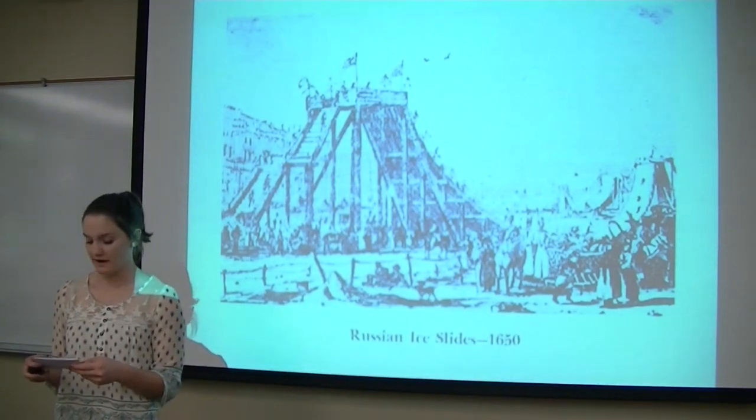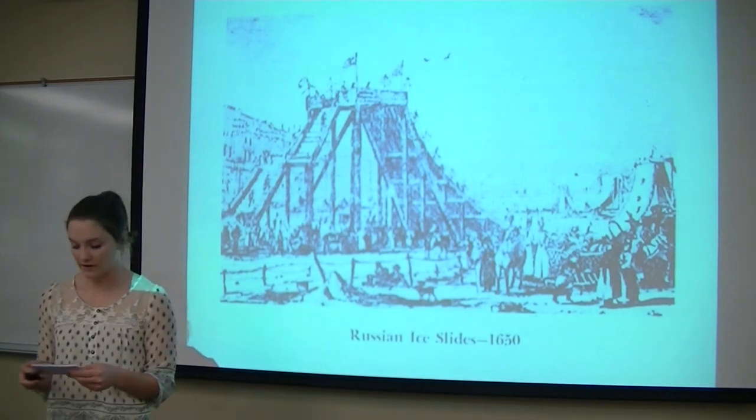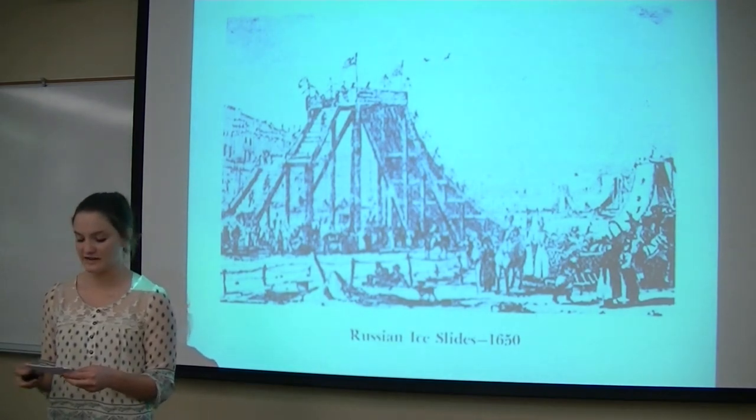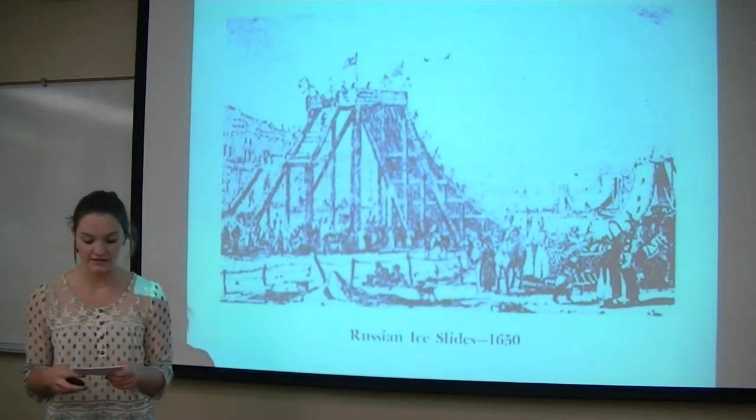American entrepreneurs quickly recognized the potential roller coasters had, and thus in 1884, the first roller coaster was created in the United States. It was called the Gravity Switchback Pleasure Railway, and it was located at Coney Island. This coaster was unique for its smooth tracks and was developed by LaMarcus Thompson, who was nicknamed the Father of Gravity due to his major developments in the roller coaster world.